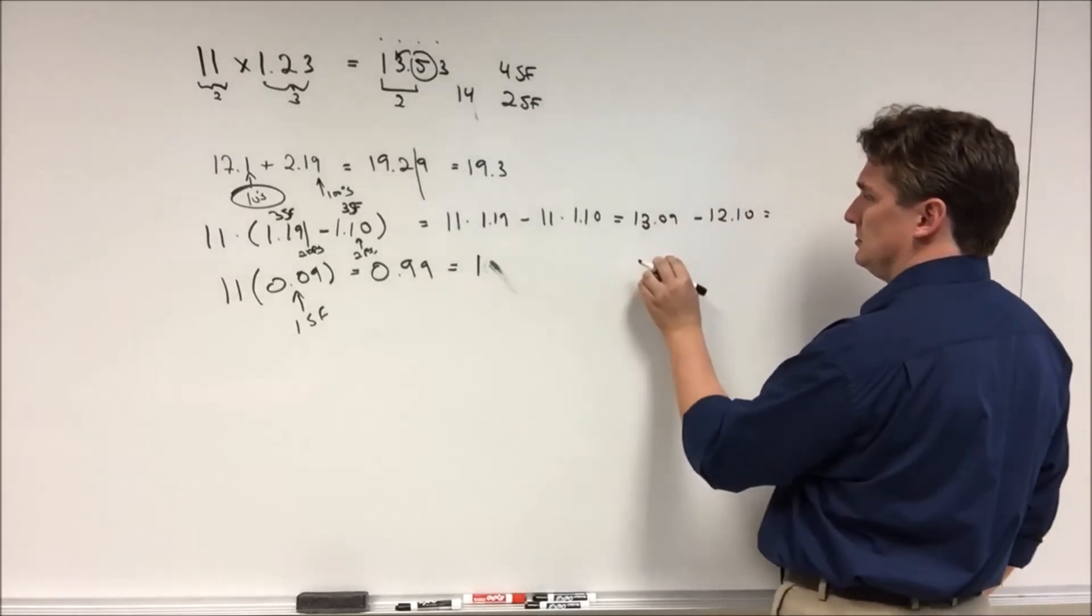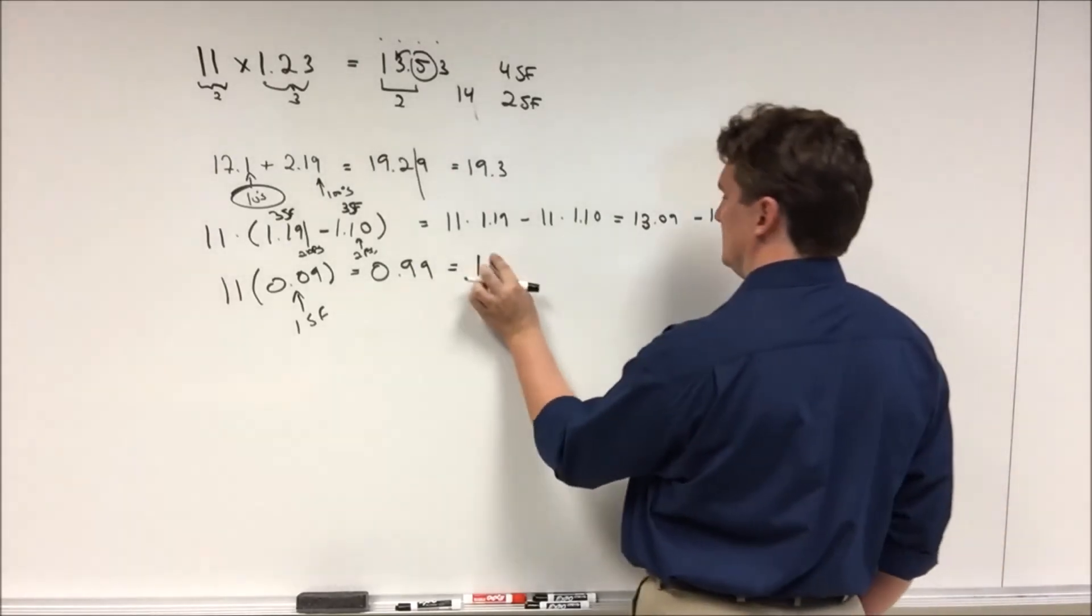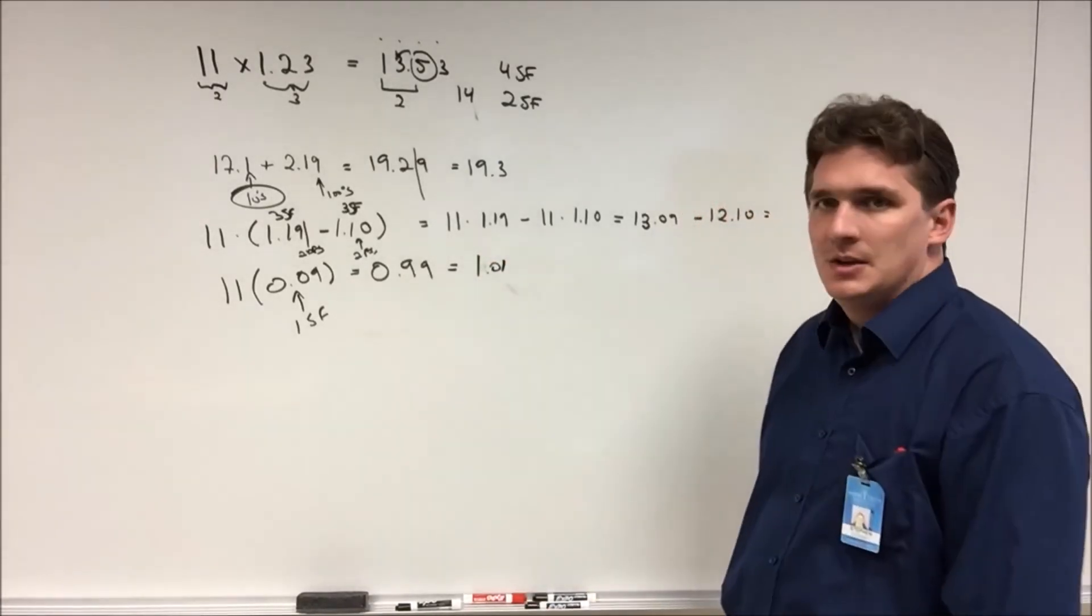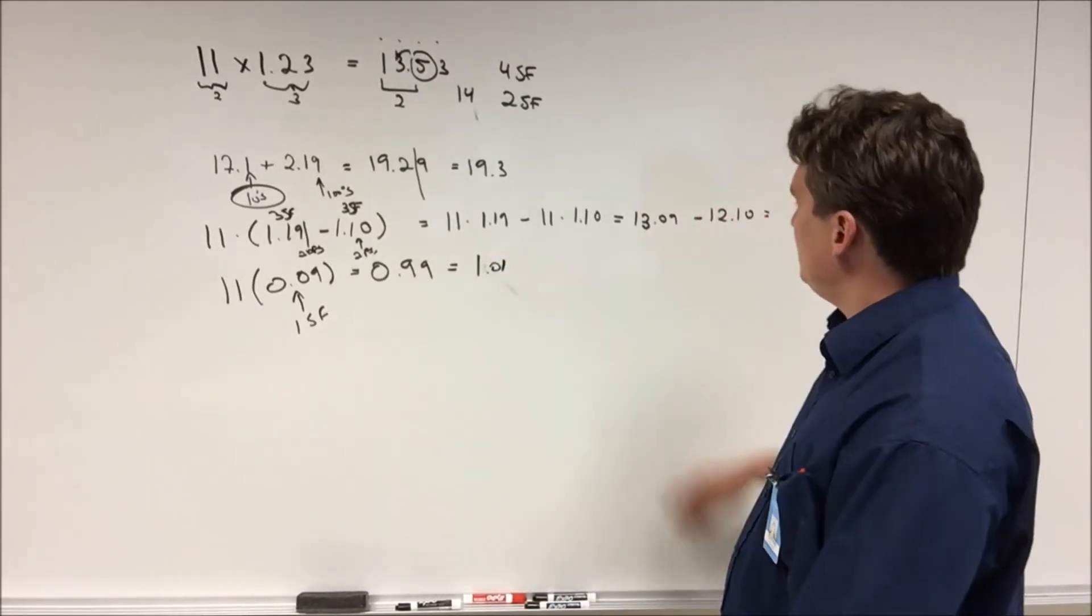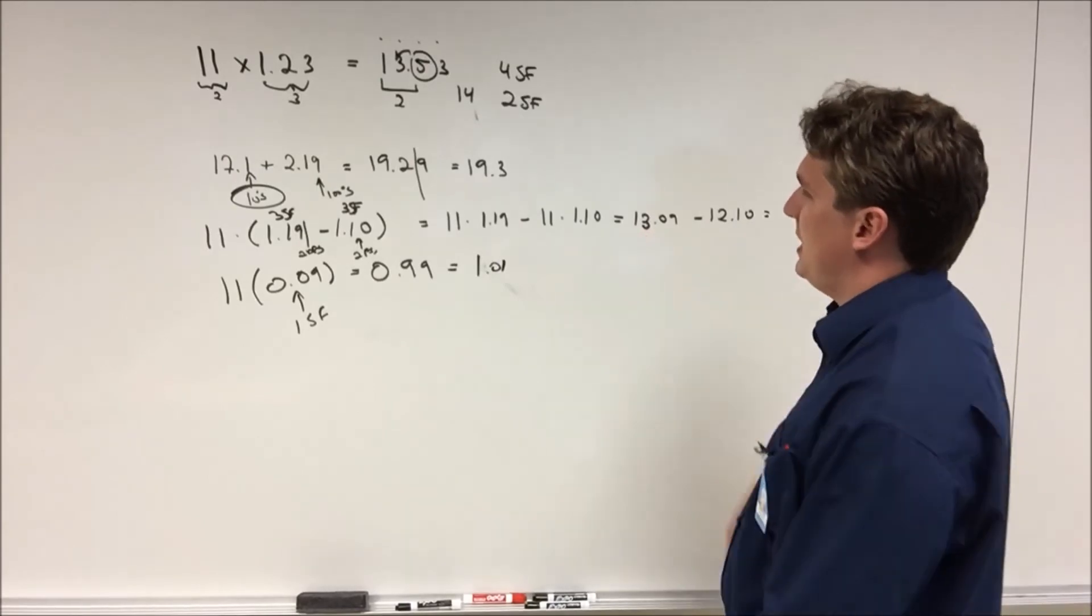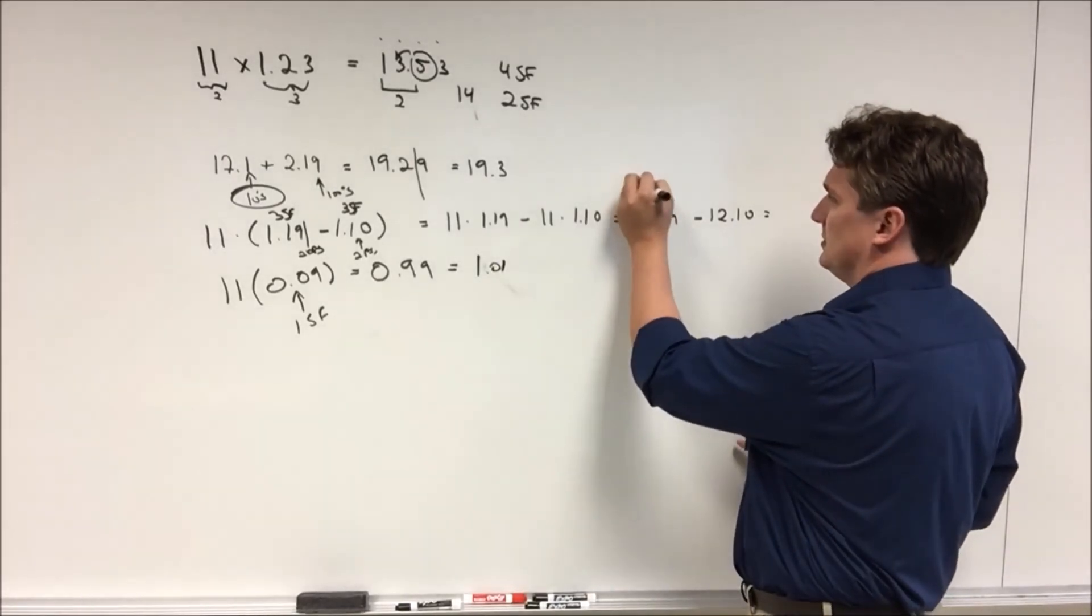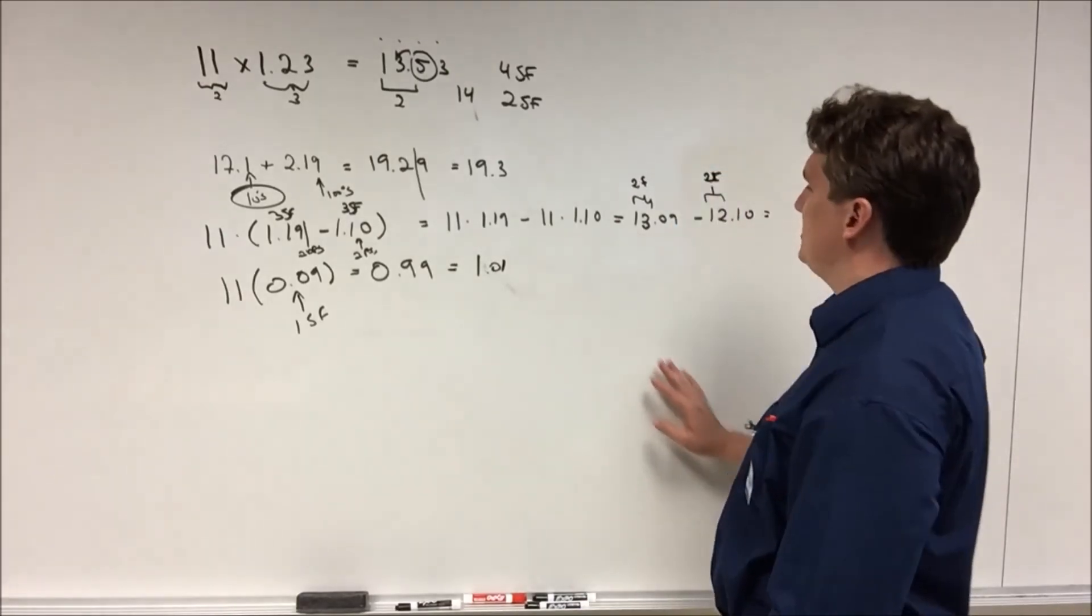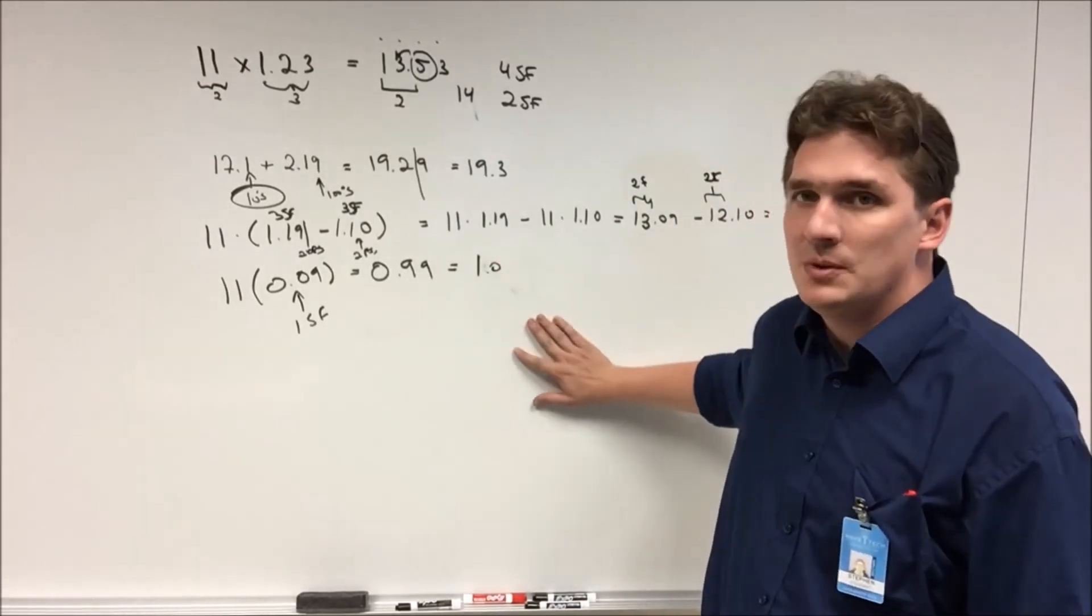So the question is, who's right? In this case, if we did all the math and worked it out, we should end up with two sig figs here, two sig figs here, which will leave us with a final answer containing two figs, which would be 1.0.